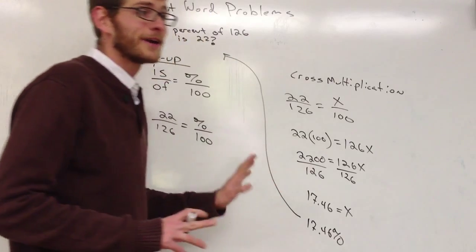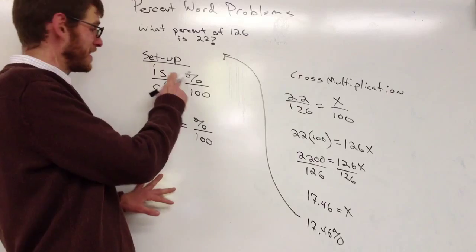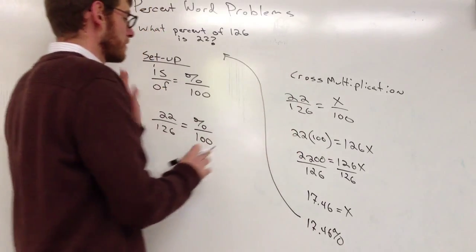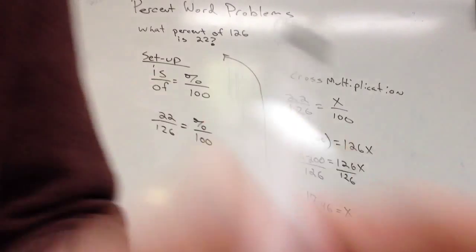Okay, so this is for the first one. You're going to have problems where they give you a percentage and not one of the ises or ofs. All the process is the same. The setup's a little bit different. Okay? Thank you.